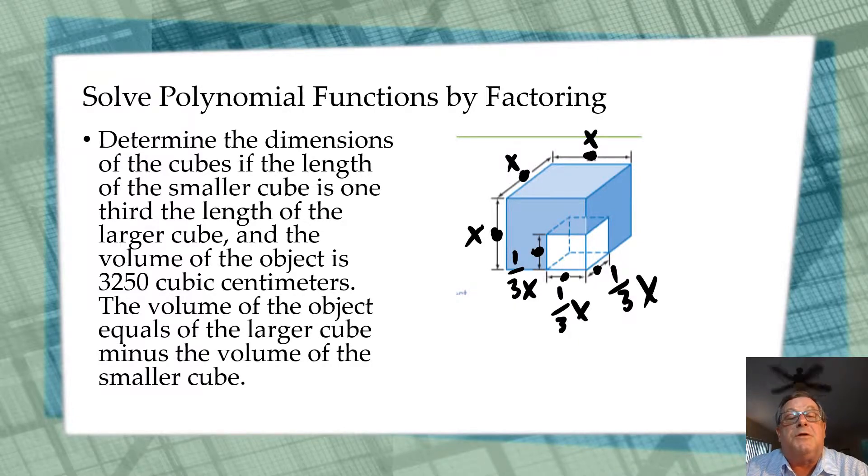Determine the dimensions of the cubes if the length of the smaller cube is one-third the length of the larger cube, and the volume of the object is 3,250 cubic centimeters.